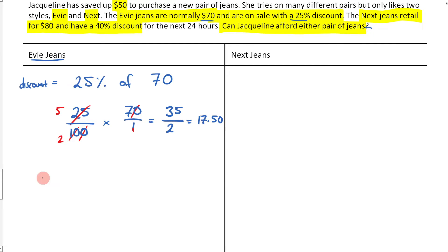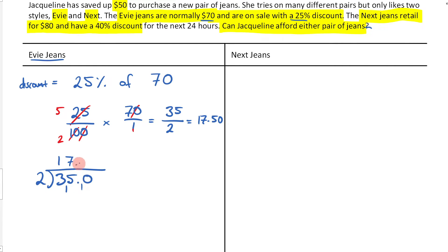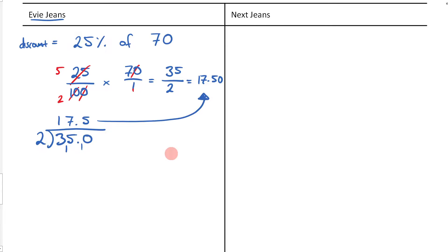Half of 35 is going to be 17.50. If you're struggling to do that, you could set up a little bit of short division. This is going to be 35.0. How many times does 2 go into 3? Once with one remainder. How many times does 2 go into 15? Seven times, because 2×7 is 14 with one remainder. How many times does 2 go into 10? Five times. So 17.50 — that's how we got that. The discount is equal to $17.50.